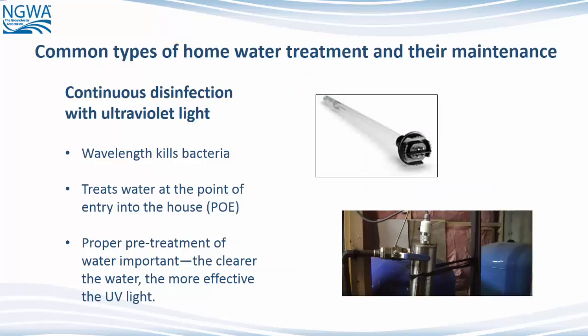Let's look at common types of home water treatment and their maintenance. First, we'll look at continuous disinfection with ultraviolet light. This system has a wavelength that kills bacteria. It treats water at the point of entry into the house, which is called PoE, and proper pretreatment of the water is important. The clearer the water, the more effective the UV light.